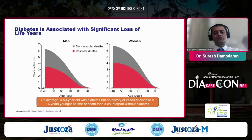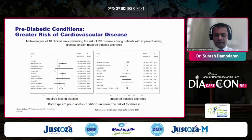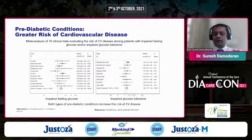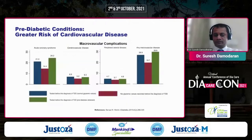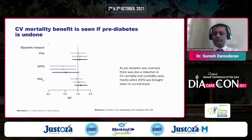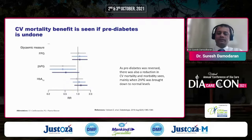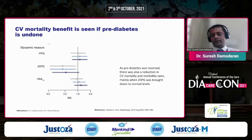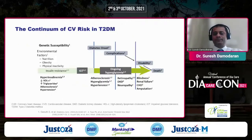Diabetes is associated with significant loss of life in years — on average, a 50-year-old diabetic with no history of vascular disease is almost six years younger at the time of death than the non-diabetic counterpart. A meta-analysis of almost 18 clinical trials confirms there is high risk of cardiovascular disease even in pre-diabetics, and CV mortality benefit is seen if pre-diabetes is addressed.